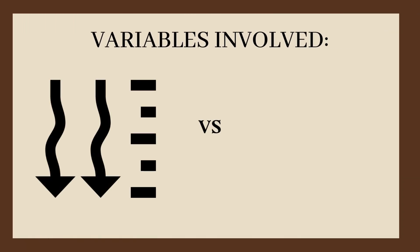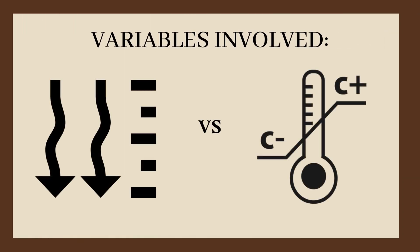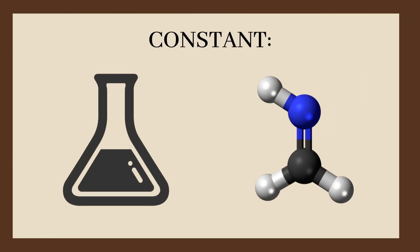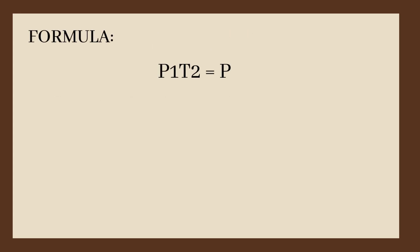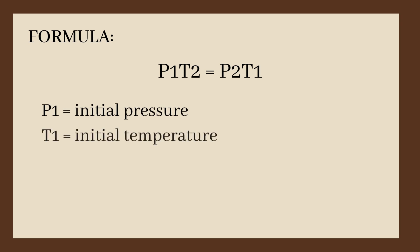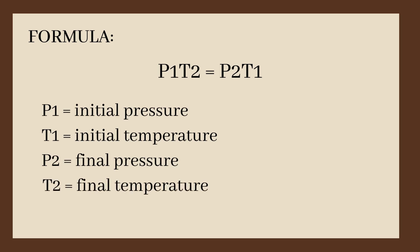Variable Symbol: Pressure vs. Temperature. Constant: volume and number of moles of gas. Definition: pressure is directly proportional to temperature while having a constant volume and number of moles of gas. Formula: P1 divided by T1 is equal to P2 divided by T2. P1 is the initial pressure, T1 is the initial temperature, P2 is the final pressure, and T2 is the final temperature.